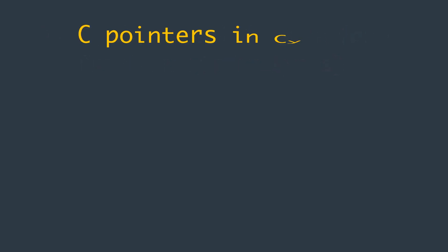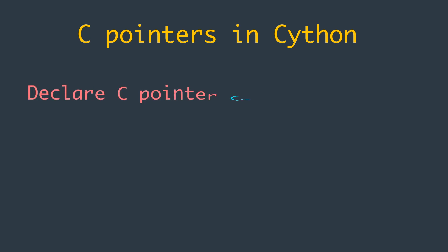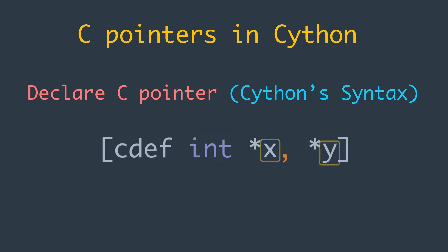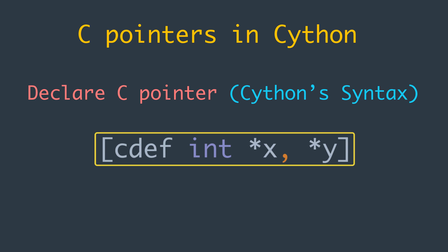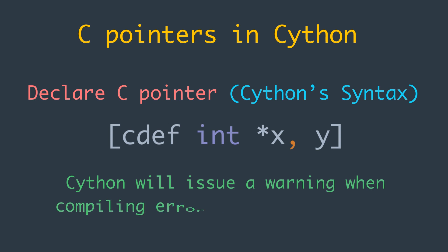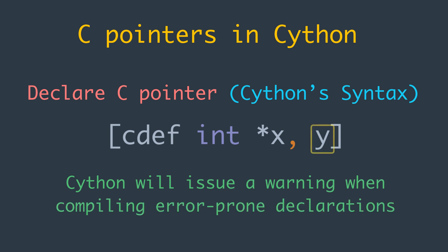Now let's talk about C pointers in Cython. We can declare C pointers using Cython's syntax, as shown in these examples. The asterisk symbol can be declared contiguous to the type or to the variable itself, although the pointerness is linked with the variable, not the type. For instance, writing 'int* x, y' will declare an integer pointer x and a non-pointer integer y, and Cython will issue a warning when compiling such error-prone declarations.